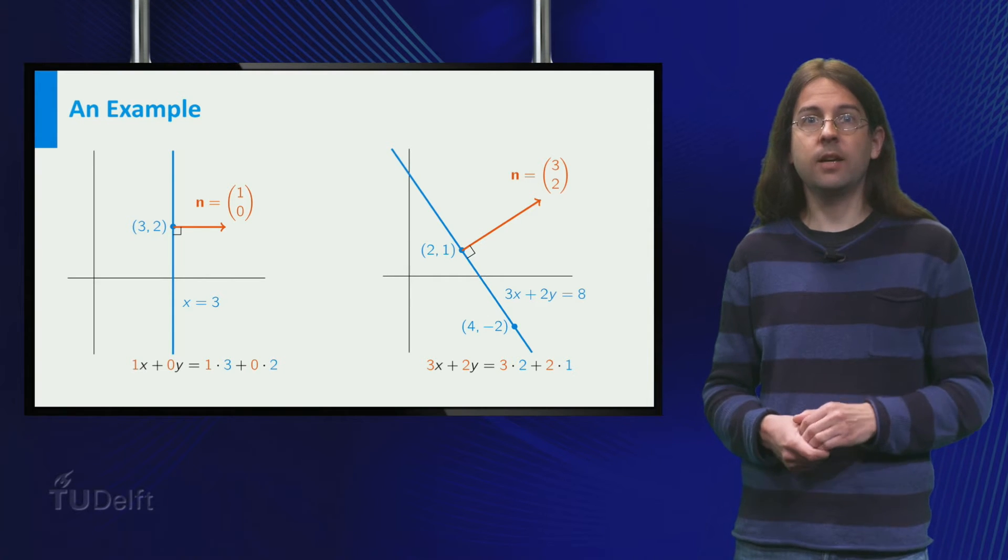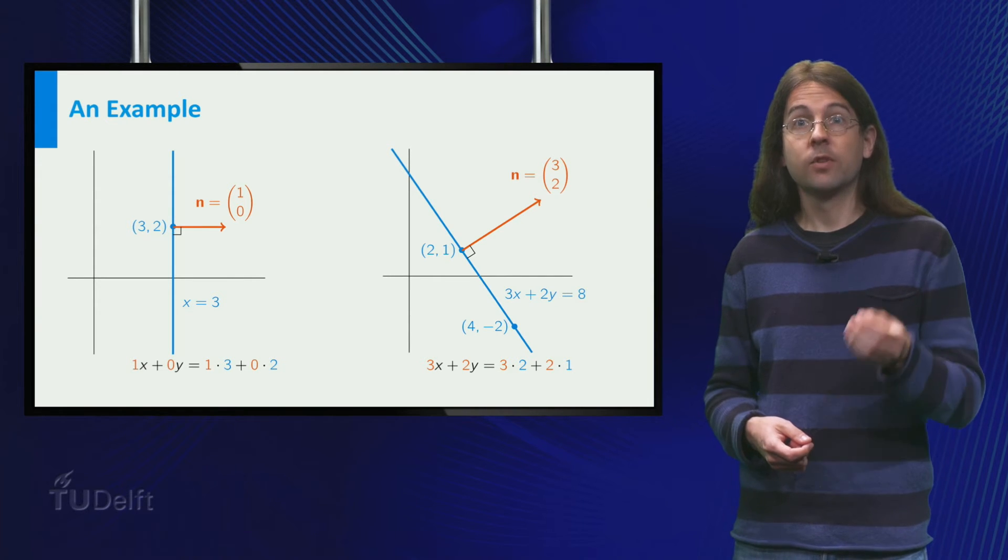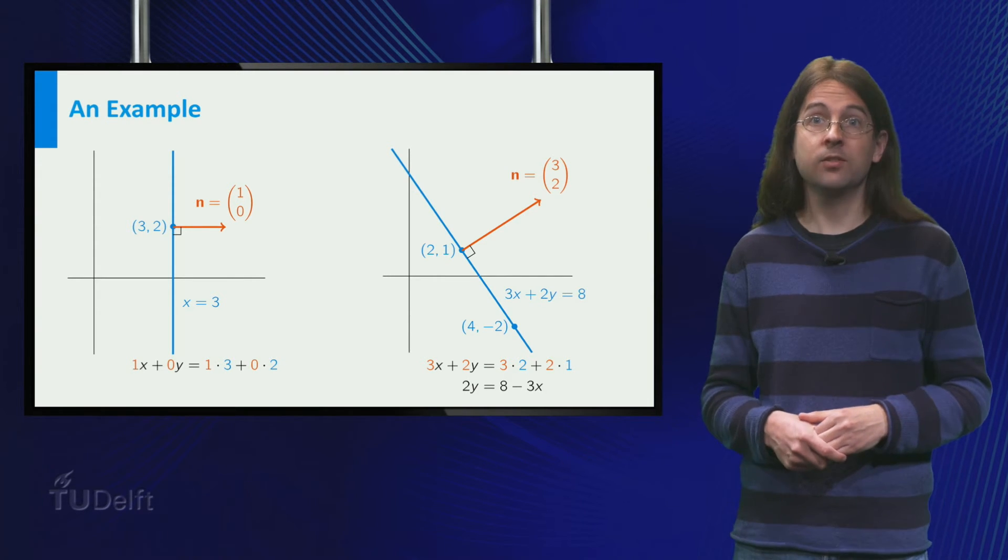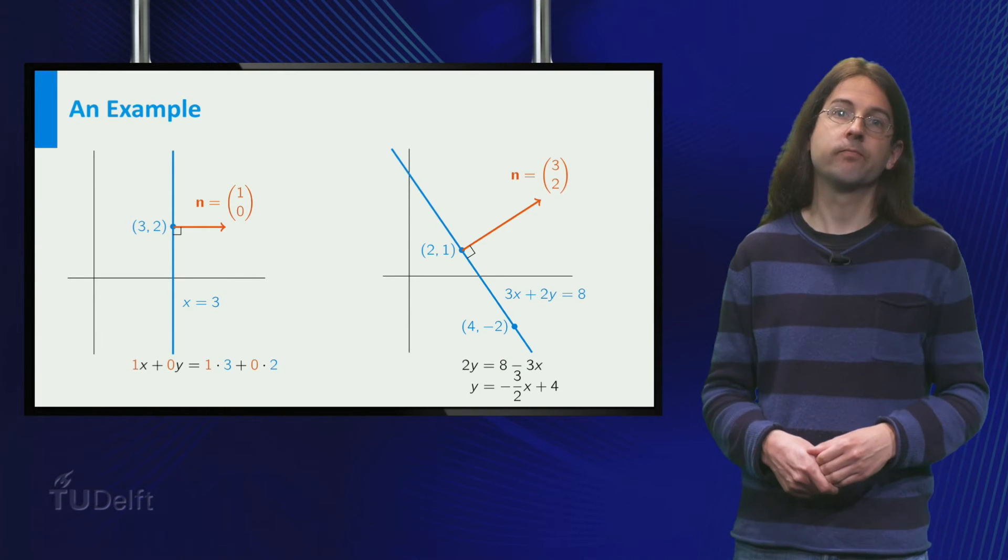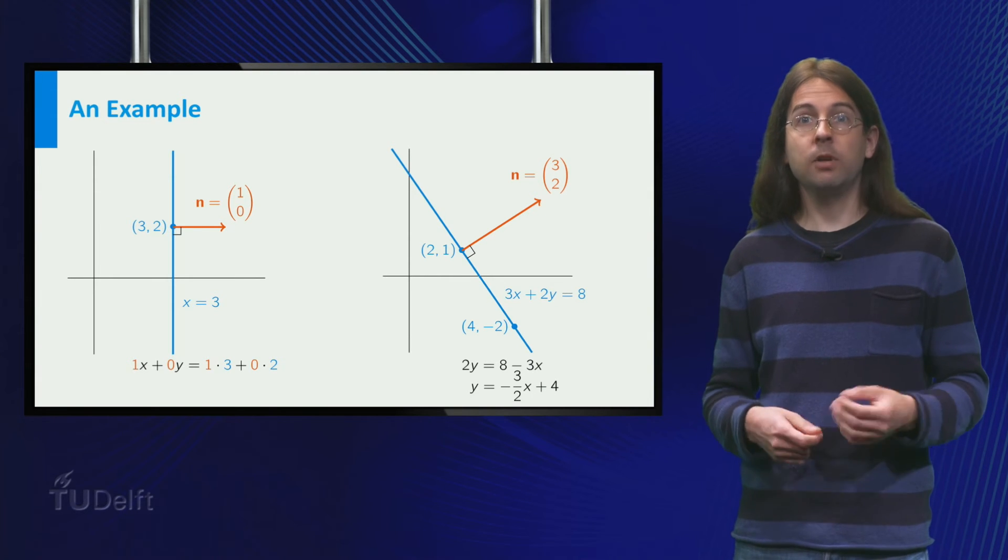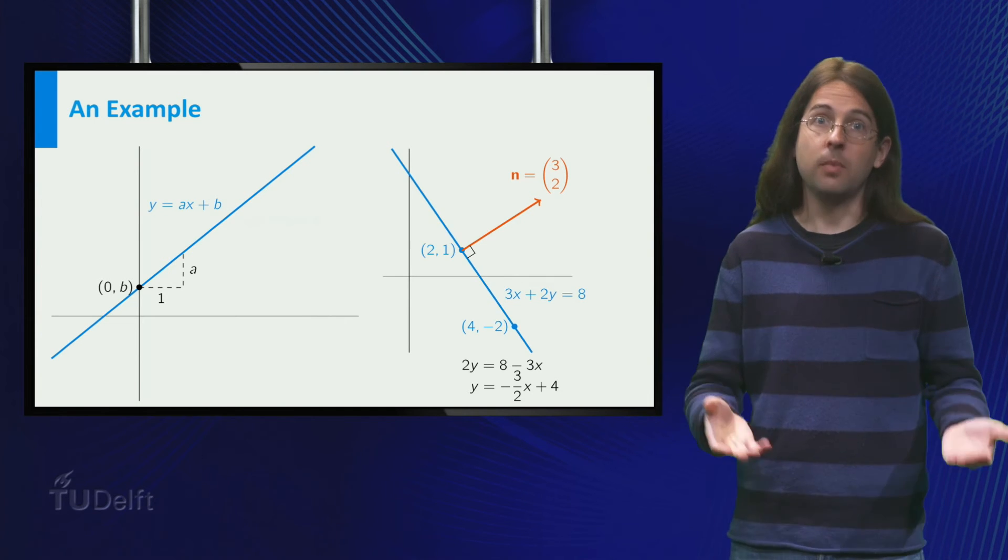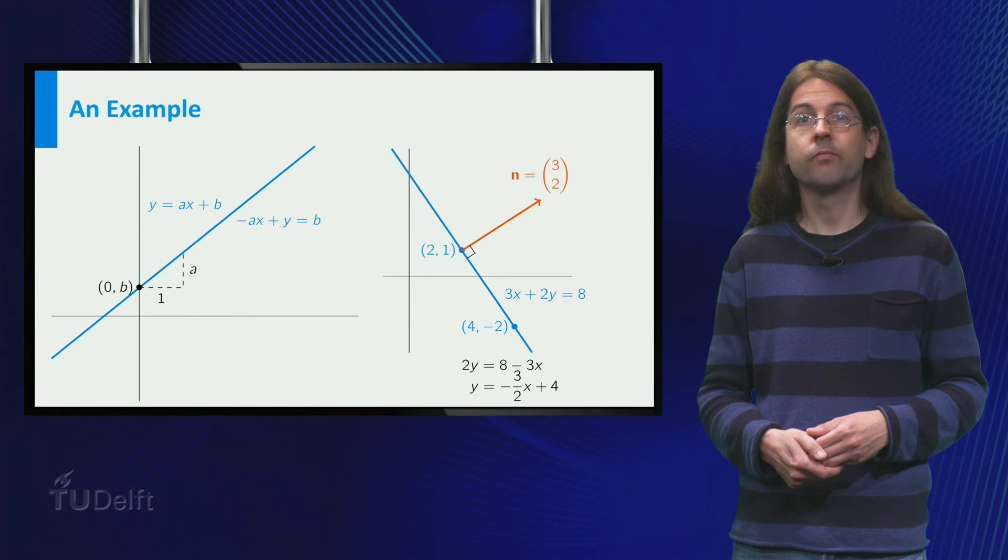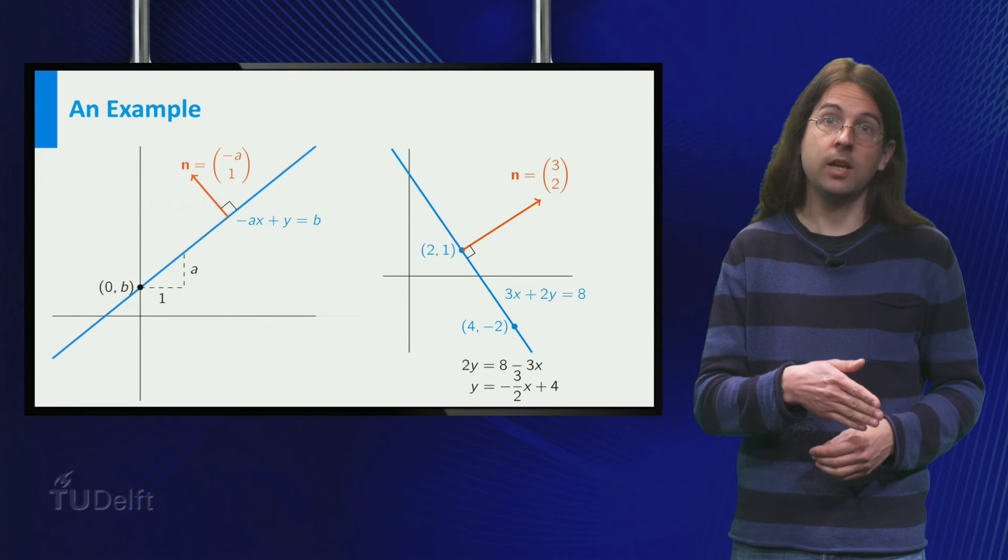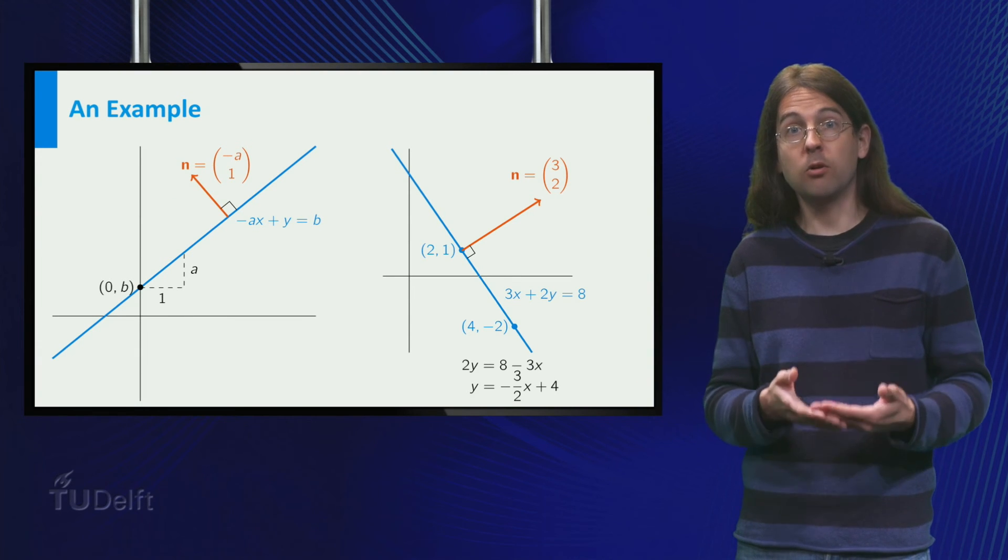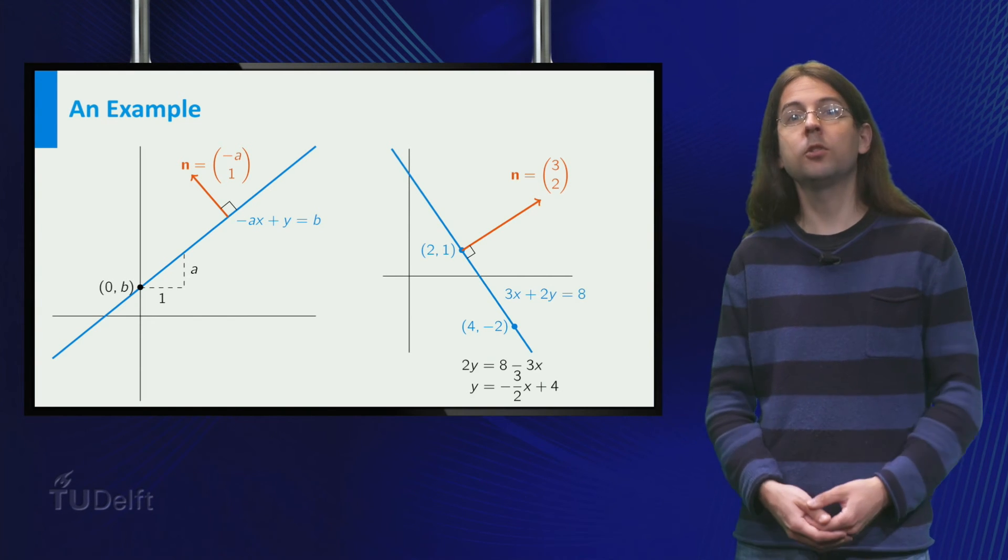To connect this last line to the form you already know, you can rewrite it. First, two y is eight minus three x, and thus y equals four minus three over two x. Likewise, you can rewrite any equation in the form y equals ax plus b to minus ax plus y equals b. And from the last formula you can read off the normal vector minus a comma one, by taking the coefficients in front of x and y in the equation as the components of the normal vector.